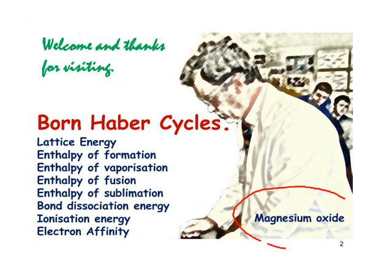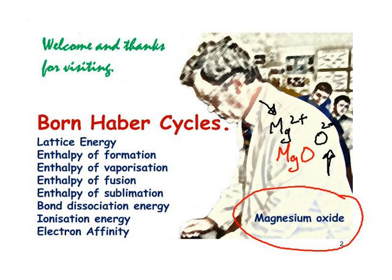This time we look at the Born-Haber cycle for magnesium oxide, formula MgO, made up of a magnesium 2+ ion and an oxide 2- ion. In this particular case we're going to be dealing with a first and a second ionization energy for magnesium, and we're also going to be dealing with a first and second electron affinity for oxygen.